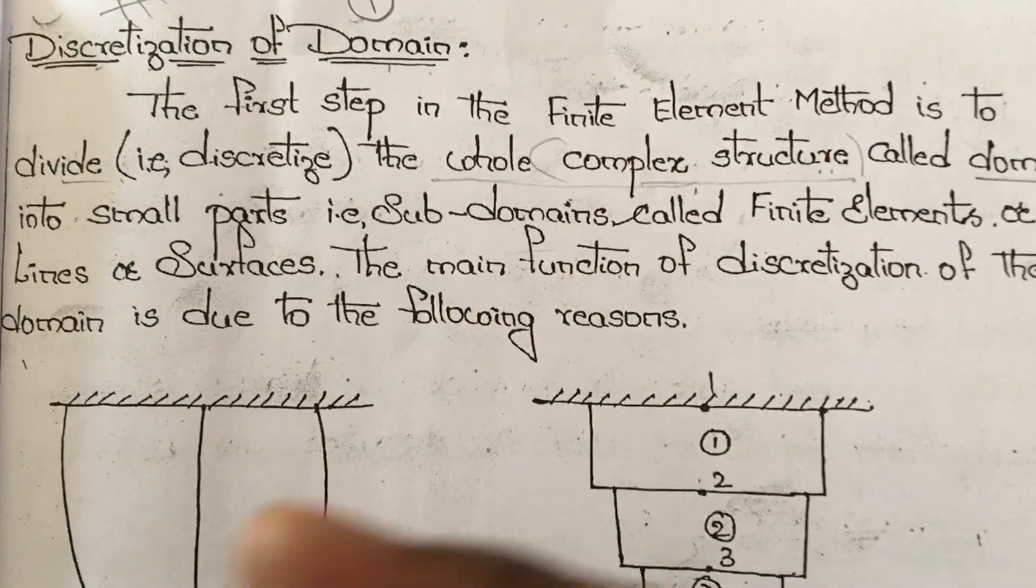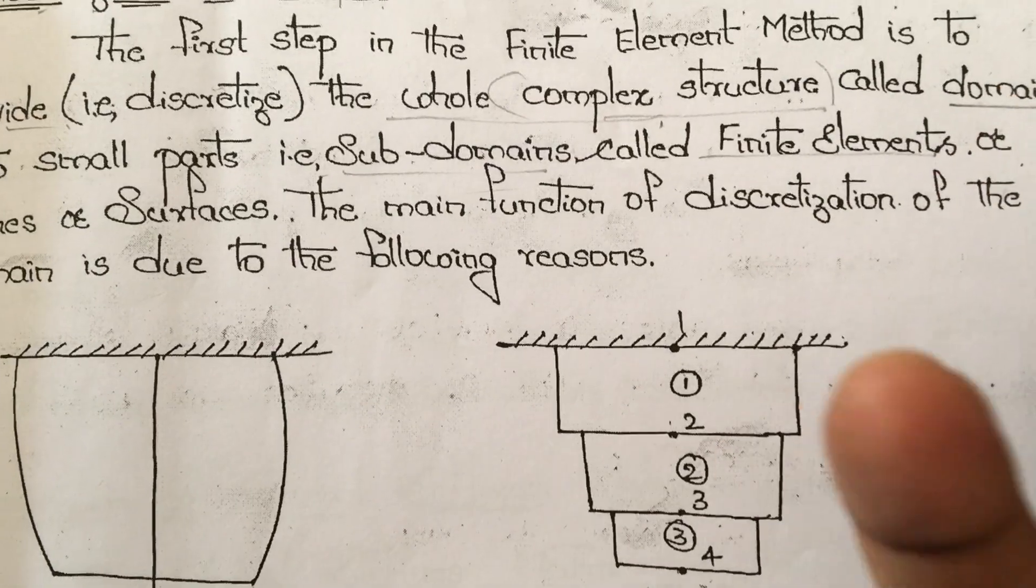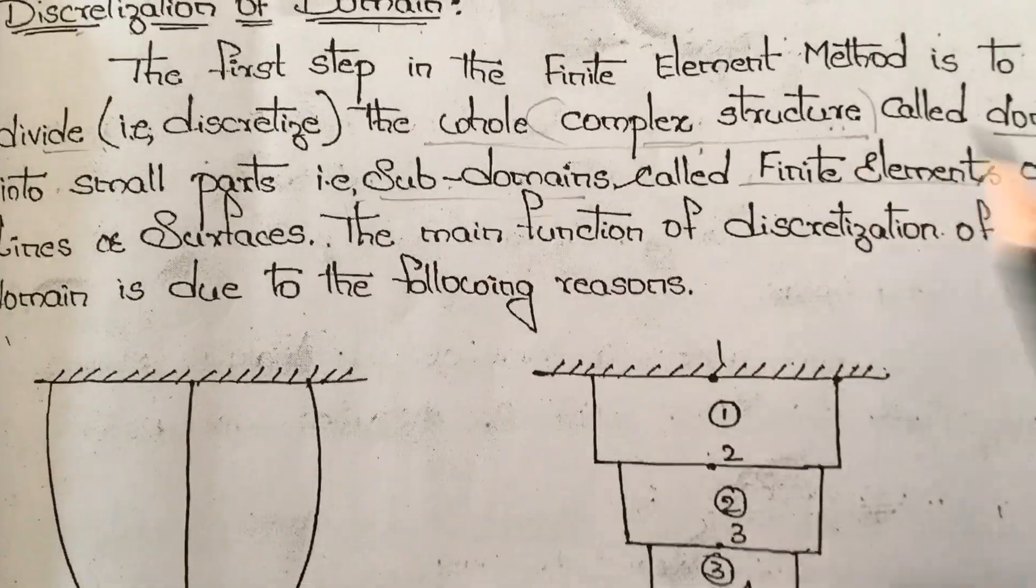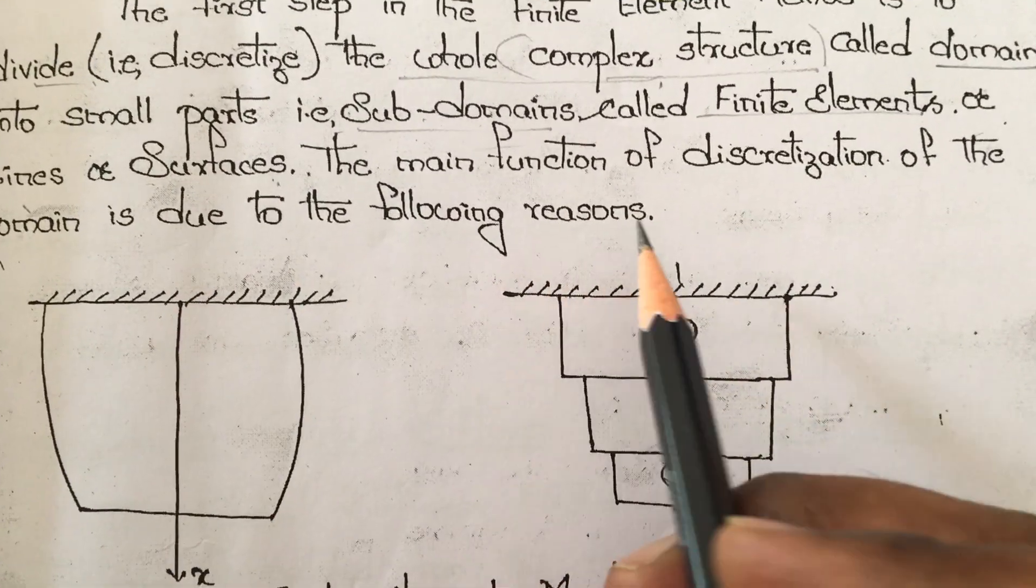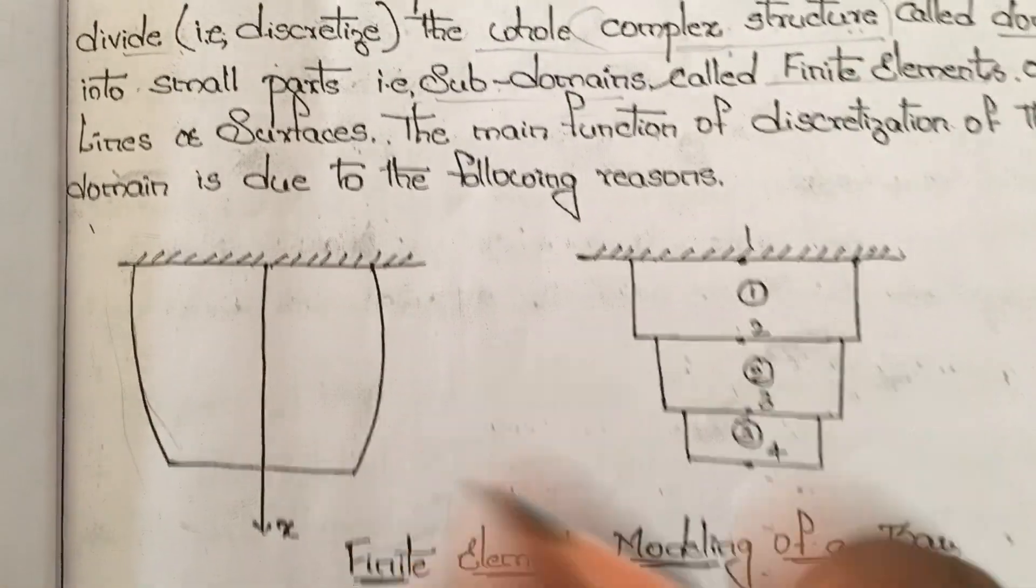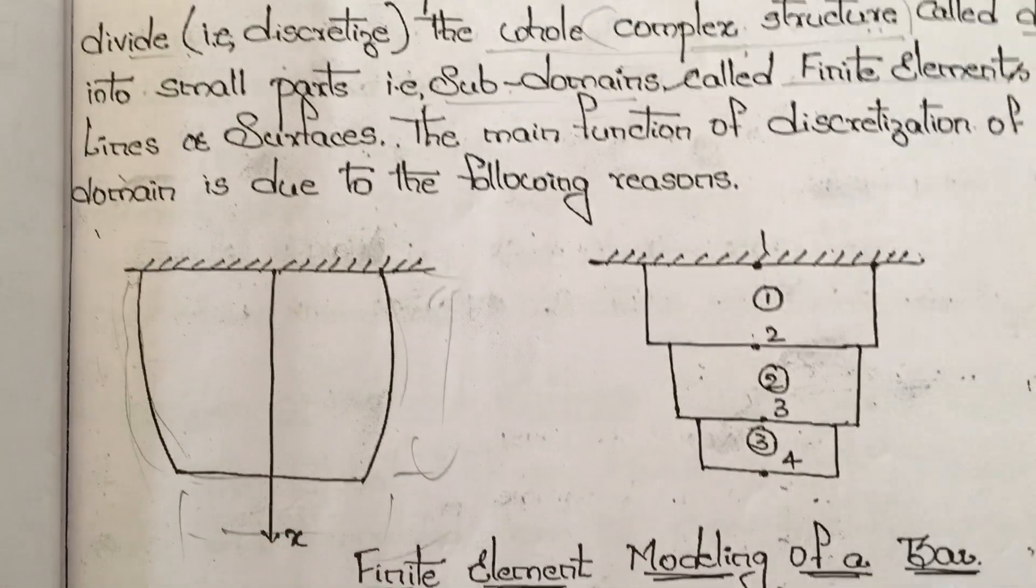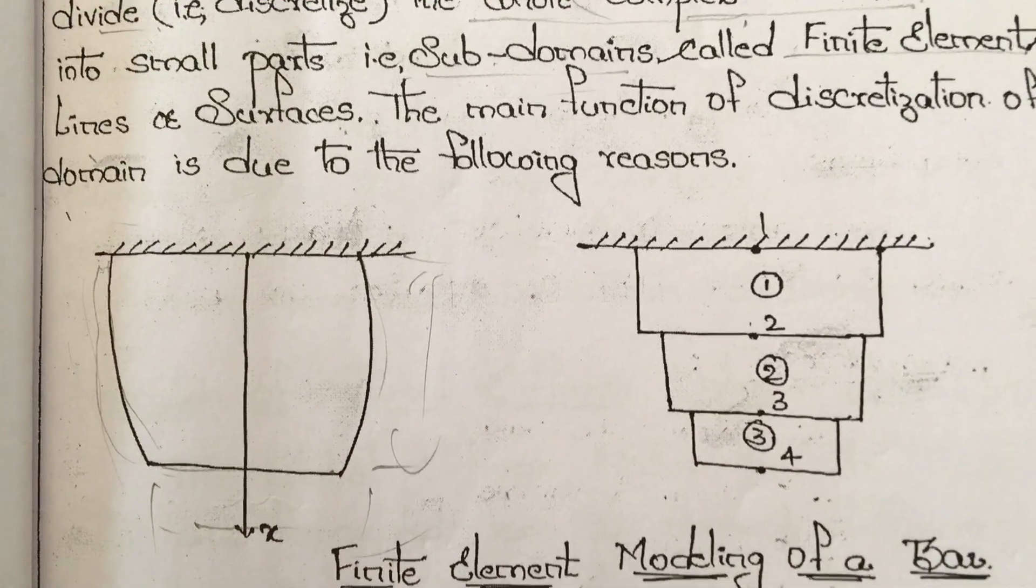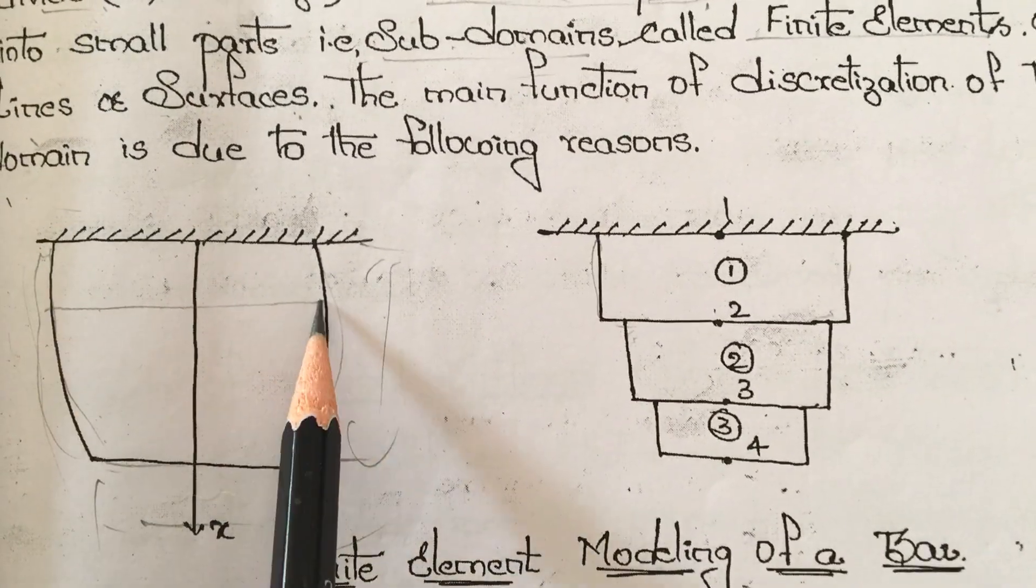Domain is divided into small parts or sub-domains called finite elements, the lines or surfaces. The main function of discretization is for the following reasons. For example, if you look at this diagram, this is not a perfect rectangle. It has a curvy nature with a loading acting. To work with this in finite element, we create it as rectangle boxes, as lines.